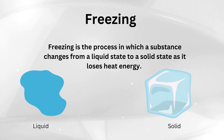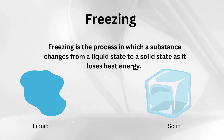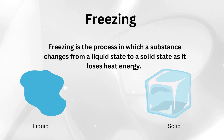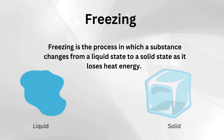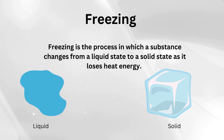The next phenomenon is freezing. Freezing is the process in which a substance changes from a liquid state to a solid state as it loses heat energy. A common example is liquid water turning into solid ice. If you place a glass of water in a refrigerator, the molecules come closer together, and with no more heat energy, the water freezes and converts into ice.